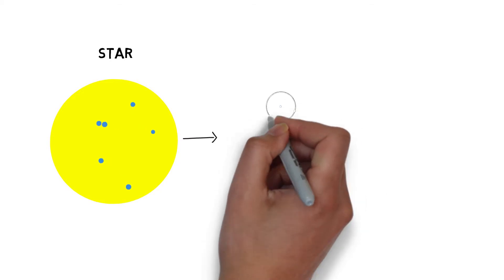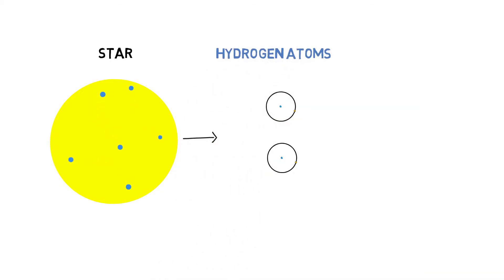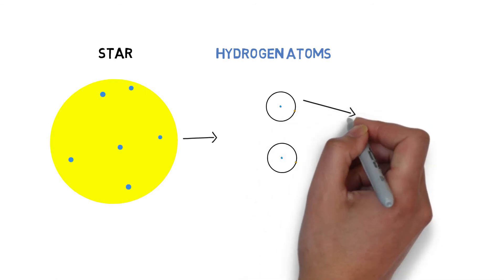At last, the gas will be so hot that when the hydrogen atoms collide, they will no longer bounce back from each other but instead fuse to form helium.